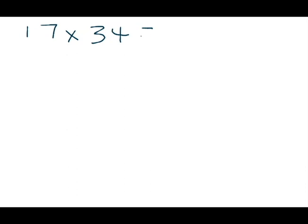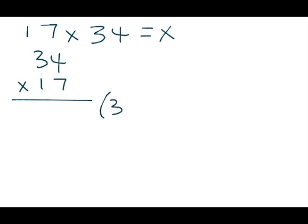We are going to continue with partial products in solving multiplication problems. This time I'm going to do a two-digit by two-digit multiplication problem: 17 times 34, and we're going to solve for the unknown. I'm going to write 34 at the top, times 17. It looks like we're going to do the standard algorithm but we're not, so please put your knowledge of that aside for now. I like to start with the 3 in 34 — the digit on the left-hand side. The 3 in 34 is in the tens place so the value of that 3 is actually 30. I'm going to multiply that by the 1 in 17, but the 1 in 17 is also in the tens place, so the value of the 1 in 17 is 10. Multiply 30 times 10 and you get 300.